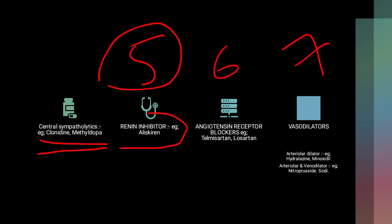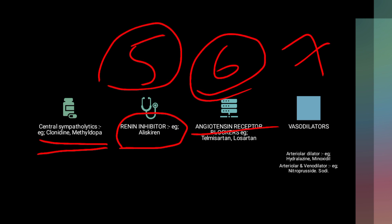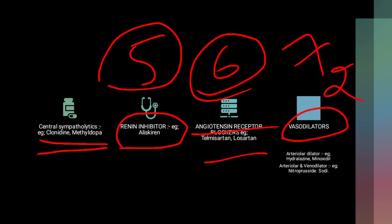The fifth class is renin inhibitors — example aliskiren. The sixth class is angiotensin receptor blockers — examples telmisartan, losartan, and candesartan. The seventh class is vasodilators, classified into two types: arteriolar dilators — example hydralazine and minoxidil; and arteriolar-venodilators — example nitroprusside sodium.